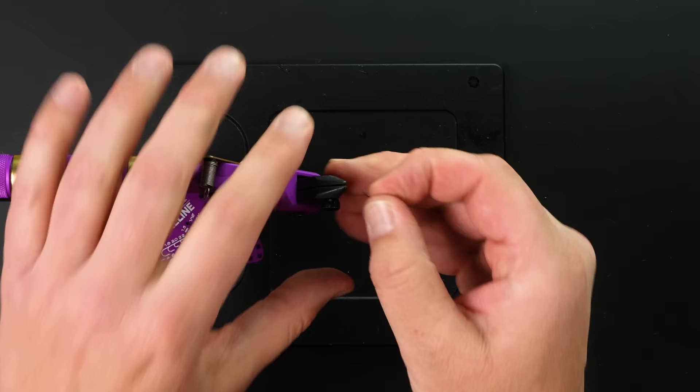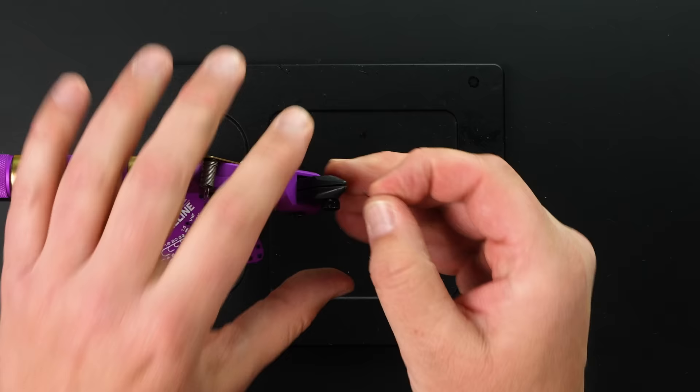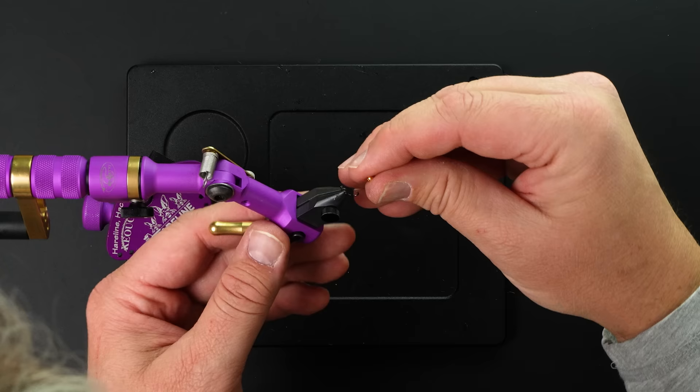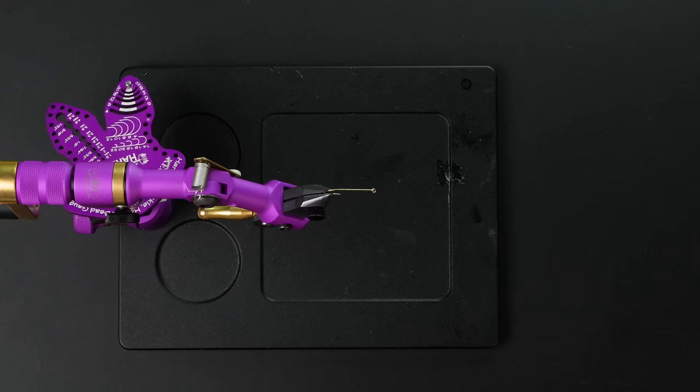Jig hooks, same type of deal. This is a size 16. You'll see that the bead is much smaller. But the same thing. I just take the bead and I rotate it in my fingers until I can find that little hole. There we go. And you just put it on there. That's how I like to put beads on hooks. Maybe it'll help you.